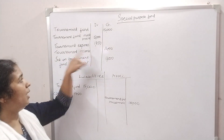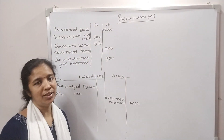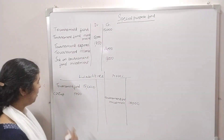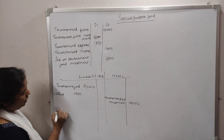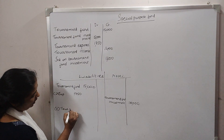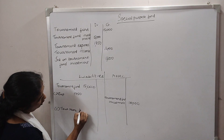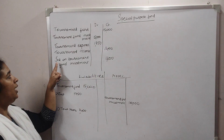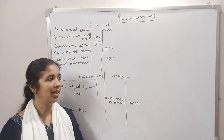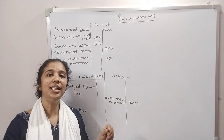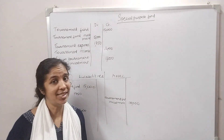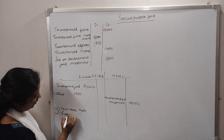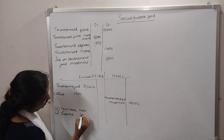The term is Tournament Income. We will get to the income at the end. We add this to the fund — Tournament Income. Interest on Tournament Fund Investment: this investment is on the $15,000. We get the interest, which is $1,200.